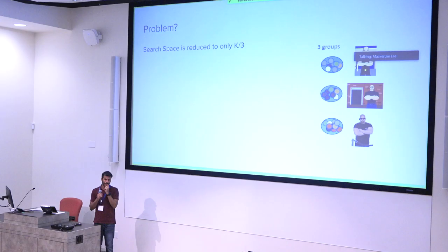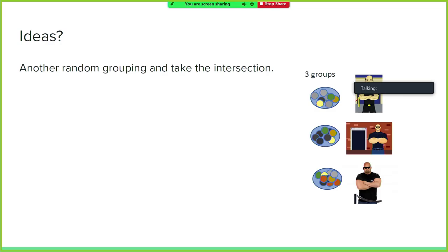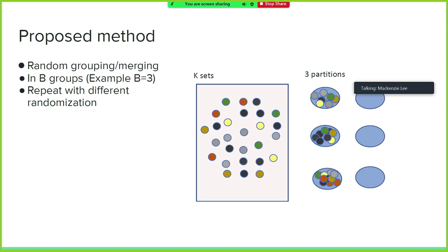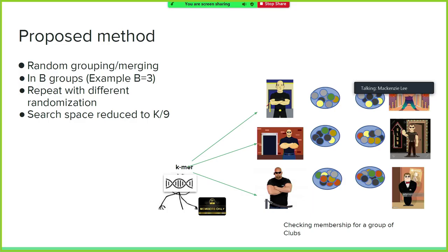We still only reduce to K over 3, and we need to pinpoint which set the k-mer is present in. The idea is to repeat the process — take another random grouping and take the intersection. We have another three groups using a different grouping method, giving us six membership testers total. Our k-mer will go to these three of them, and one or maybe multiple of them will say yes.